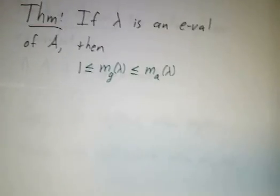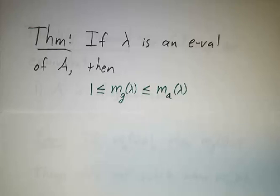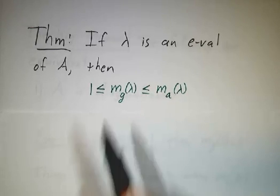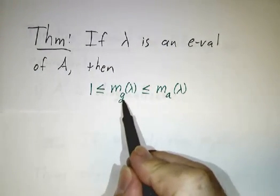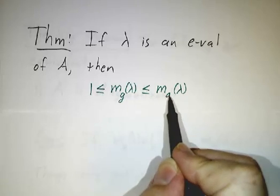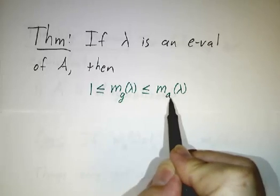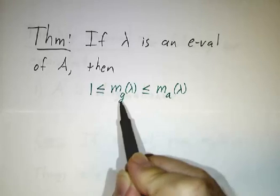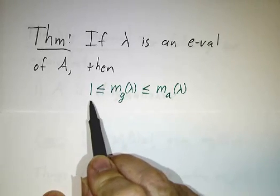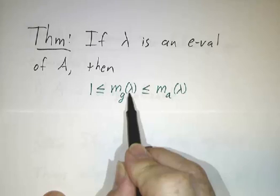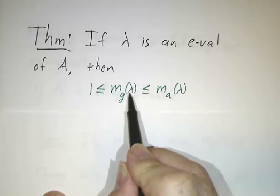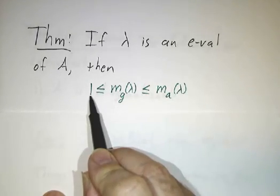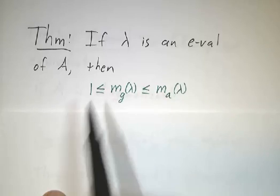Now, you might ask how these two different multiplicities are related. And the answer is that the geometric multiplicity can never be bigger than the algebraic multiplicity. It's always less than or equal to the algebraic multiplicity. On the other hand, it's always at least 1. If λ is a root of the characteristic polynomial, then there exists an eigenvector. And so the geometric multiplicity is at least 1.